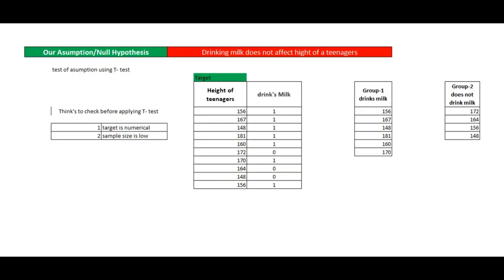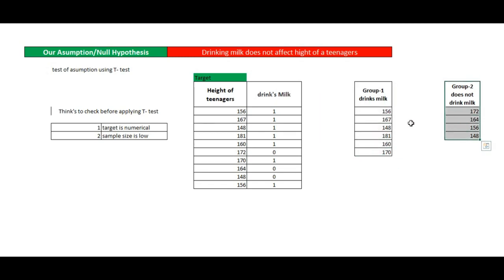Let's take a simple real-life problem. We have taken a sample of teenagers, checked their heights, and checked whether they drink milk or not. We made the assumption that drinking milk does not affect the height of a teenager. Since our target variable is the height of a teenager, this is numerical data, so we can apply a t-test. We split the sample into two groups: those who drink milk and those who do not drink milk. We then check if there is a significant statistical difference between the mean height of the two groups.